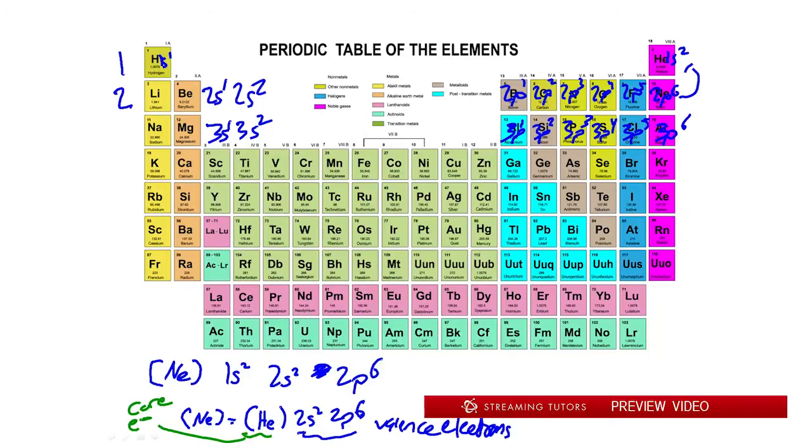Now for the fourth period we have 4s1, 4s2 once again, but now we're getting into what's called the d-block. So here we're going to have 3d1. Note that it's 3 because that's the first d orbital. 3d is the first set of 3d orbitals. Same thing would happen for the lanthanides down here. The first one here is 4f. So we have 3d1, 3d2, 3d3, 3d4, 3d5, and so on and so forth.